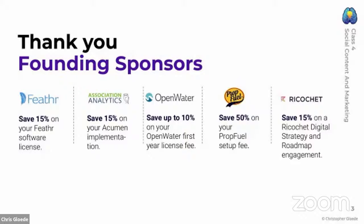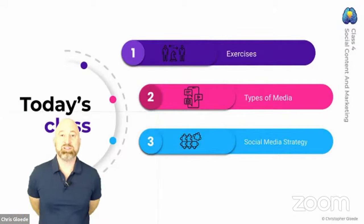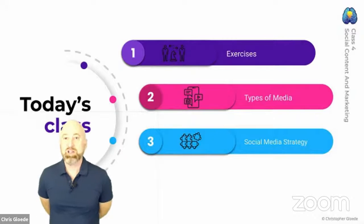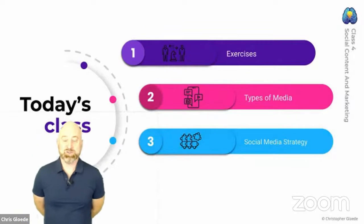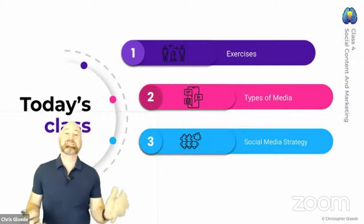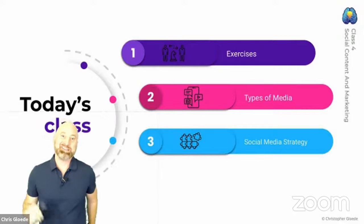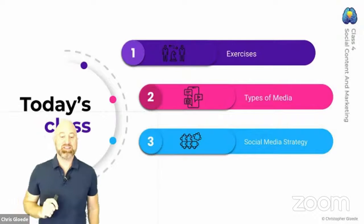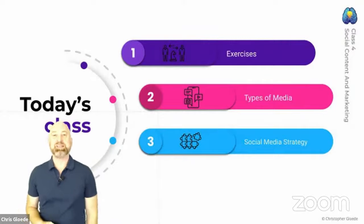My own company Ricochet is on the scene. We are here to help you do your digital marketing — we do digital marketing strategy including technique, infrastructure, and copywriting. Rachel commented that Open Water is great. We have an exciting class today with a slightly different format. Between our exercises, we're going to talk about the different types of media and then dig deep into social media strategy.